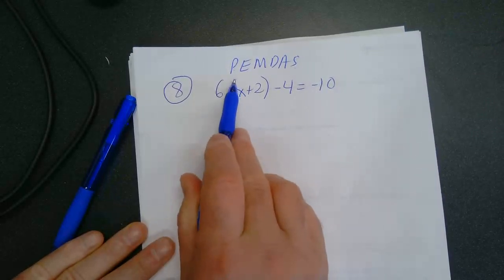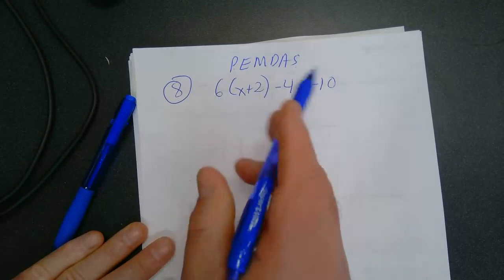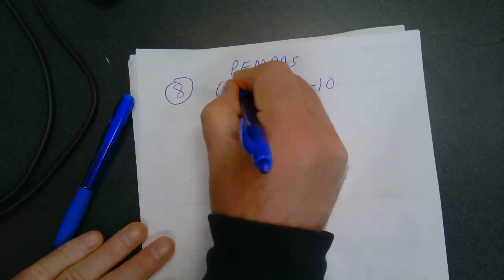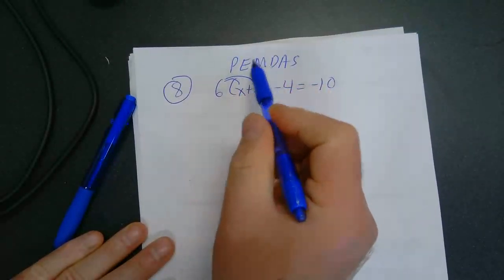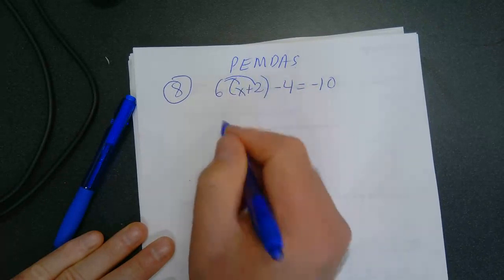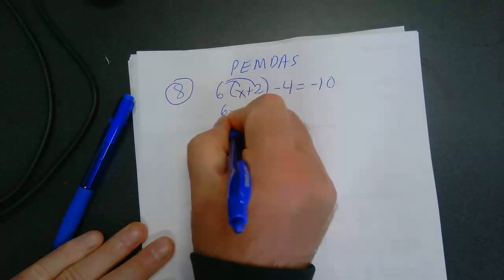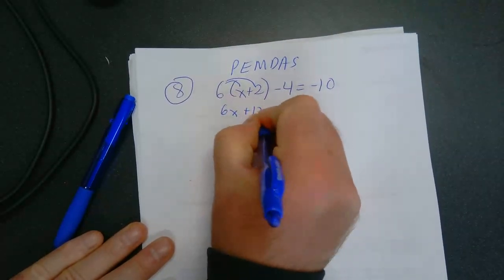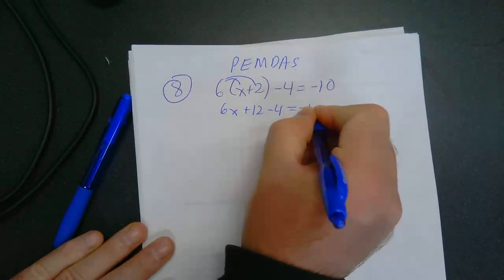Okay, how about multiplication? When you have parentheses like this and the number out in front, you can multiply. No exponents, but I'm dealing with parentheses right now. So 6 times X is 6X. 6 times 2 is 12. Minus 4 is equal to negative 10.